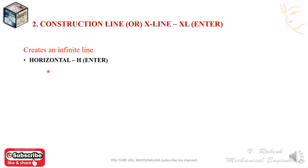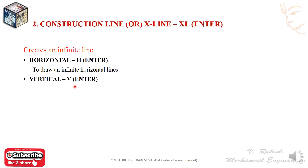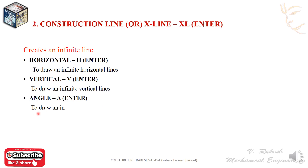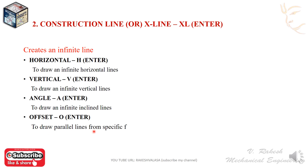It has sub-options. The first one is horizontal — shortcut key H, Enter — to draw an infinity horizontal line. Next is vertical — shortcut key V, Enter — to draw infinity vertical lines. Next is angle — shortcut key A, Enter — to draw infinity inclined lines. Next is offset — shortcut key O, Enter — to draw parallel lines from a specific line. These are the sub-commands in construction line.